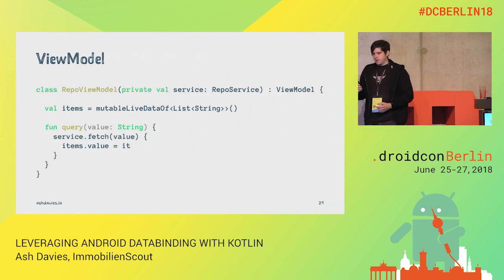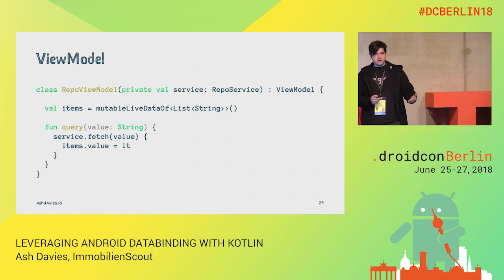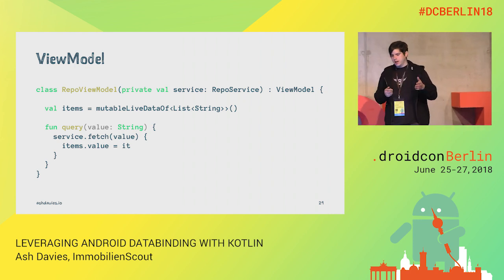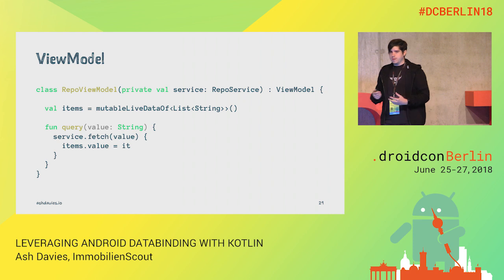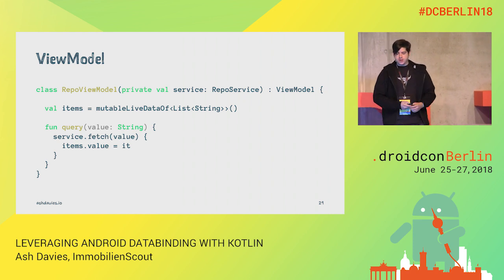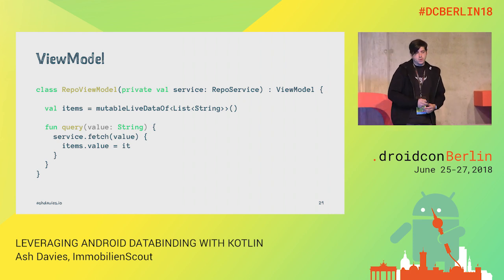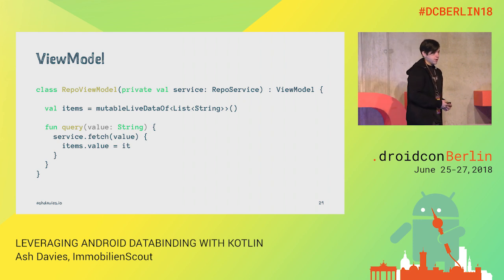Let's go back to the view model and introduce some asynchronous operation. We've got a service, and we fetch a list of repositories from the service — for example, GitHub. We'll just assume that they're strings, and that there's proper asynchronous threading going on here.